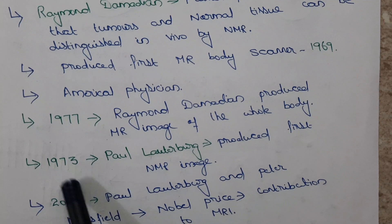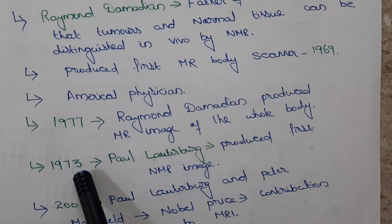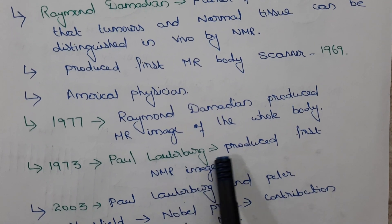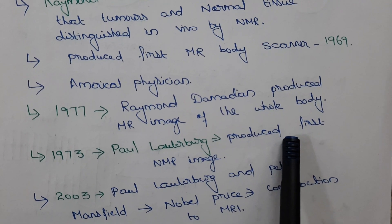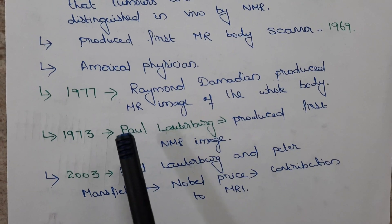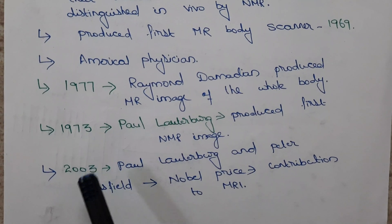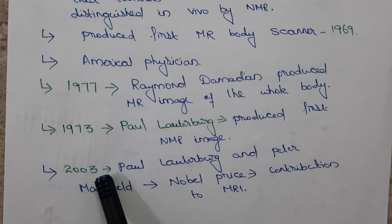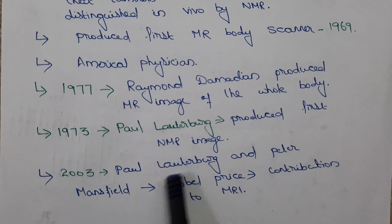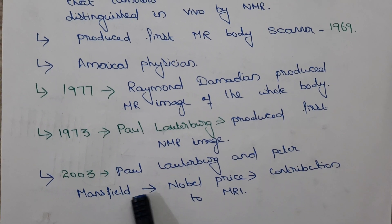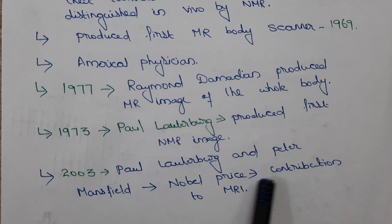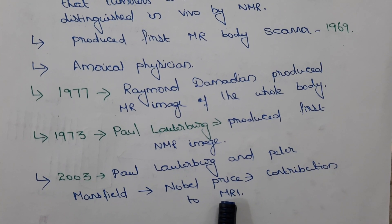Then in the year 1973, a scientist called Paul Lauterbur produced the first NMR image. For this work, in the year 2003, Paul Lauterbur and Peter Mansfield were awarded the Nobel Prize for their contribution to MRI.